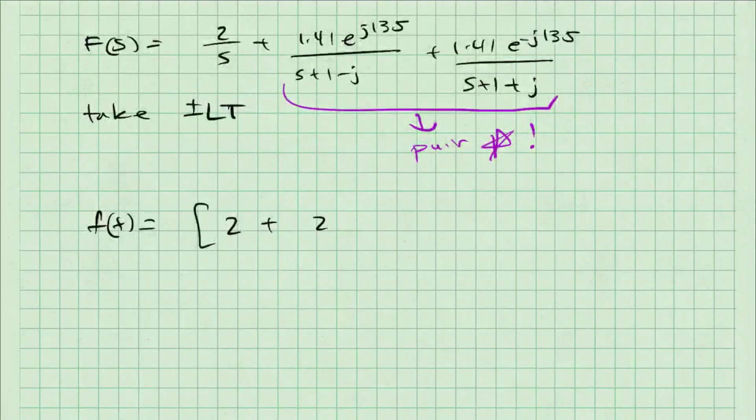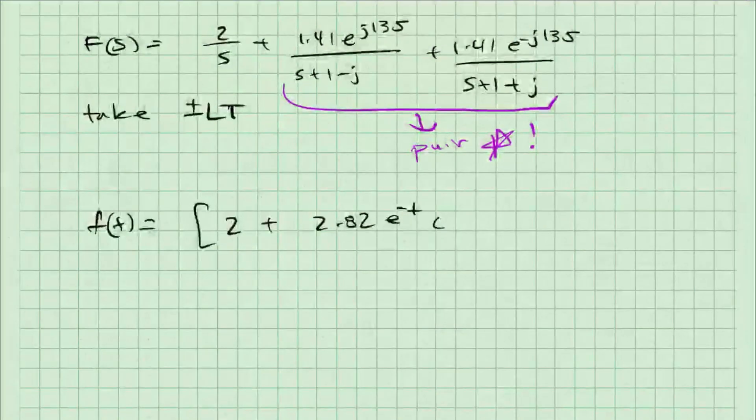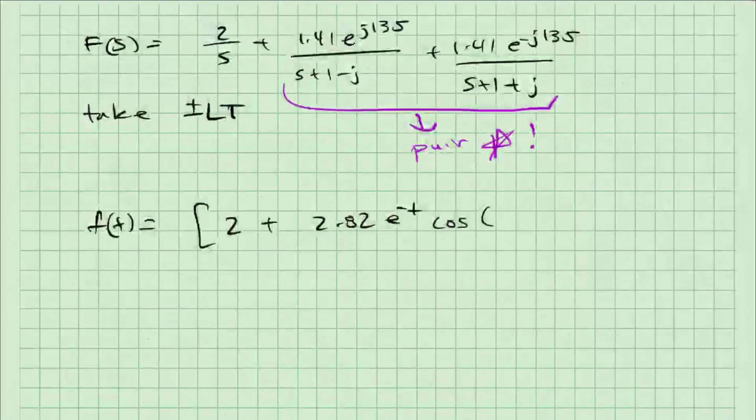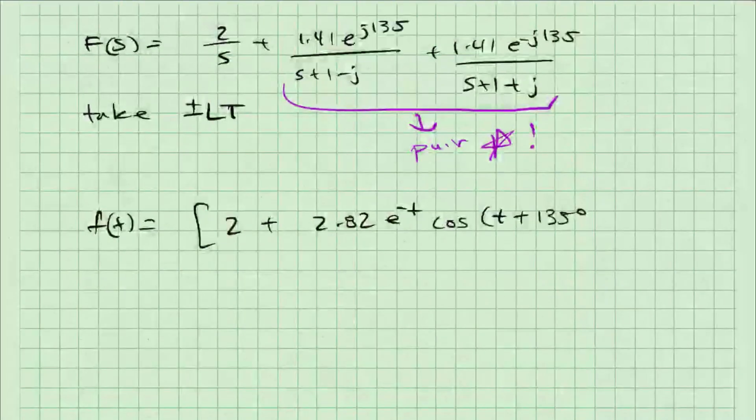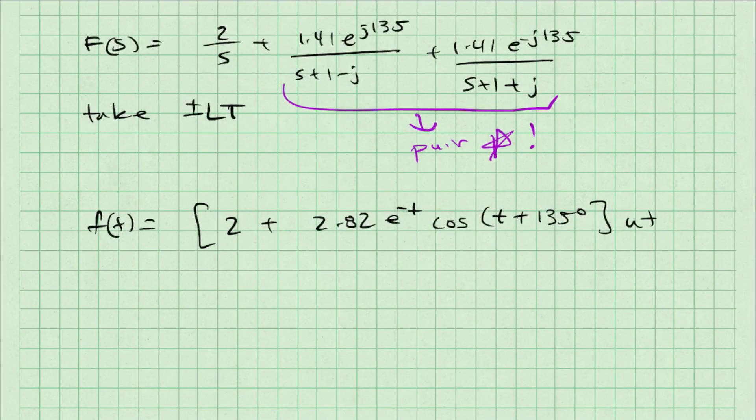So when I take the inverse Laplace transform, my result will be this. f of t is equal to 2, which is the inverse Laplace transform of 2 over s, plus 2.82 e to the minus t cosine of t plus 135 degrees, all multiplied by u of t. Note for this expression, omega was 1, a was minus 1, and theta is 135 degrees.